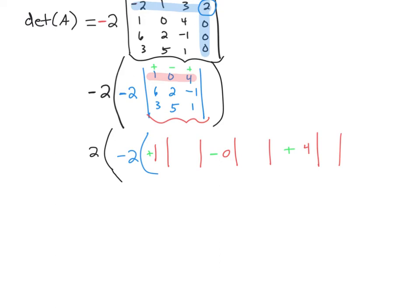So when I expand across that top row, the minor for this guy happens when I take out that row and column. So that's going to be 2, negative 1, 5, 1. And then for the 0, I would take out that row and that column, and I get 6, negative 1, 3, 1. And then for the 4, I would do it one more time. I would take out the row and column that the 4 are in, and I get 6, 2, 3, 5. That closes that.